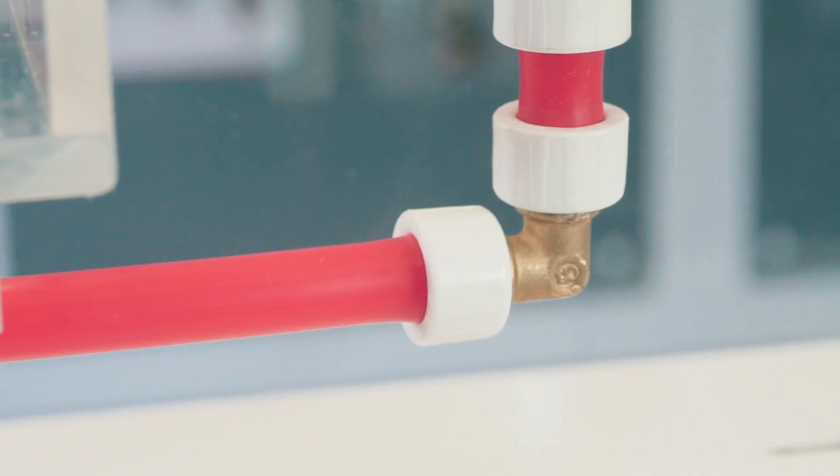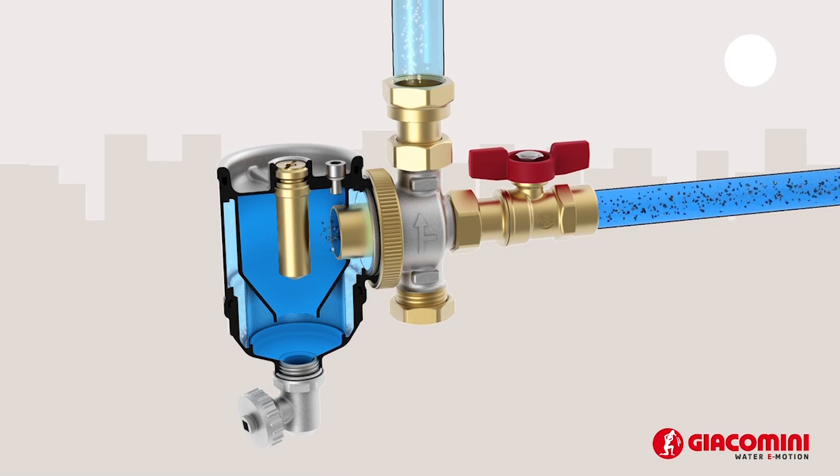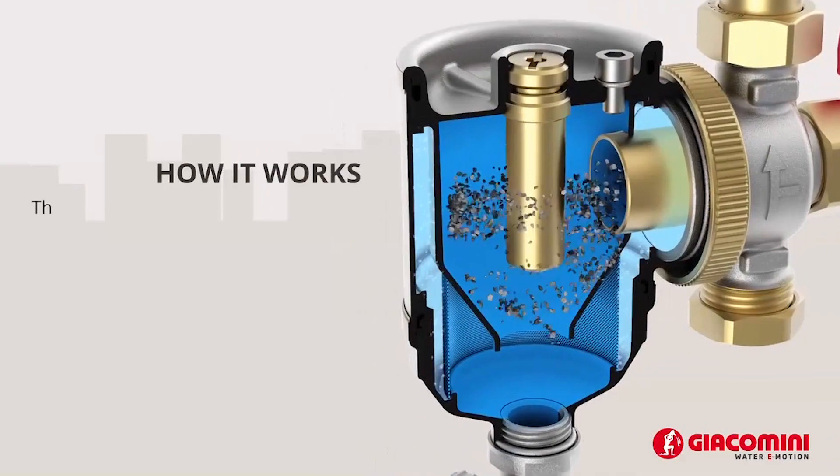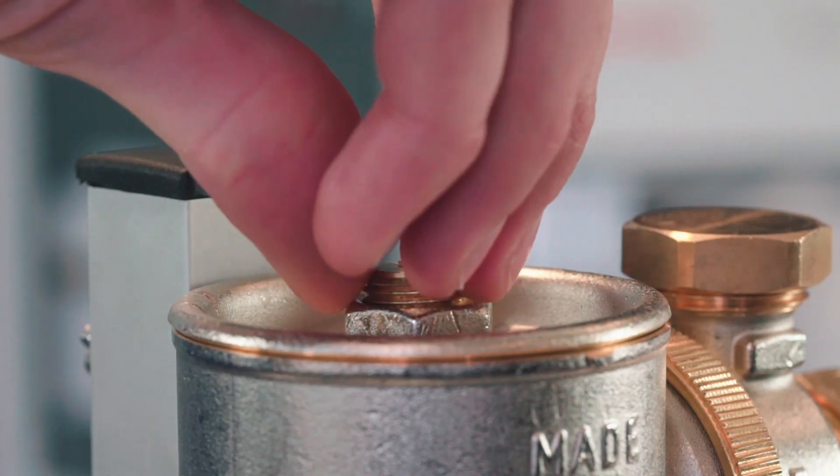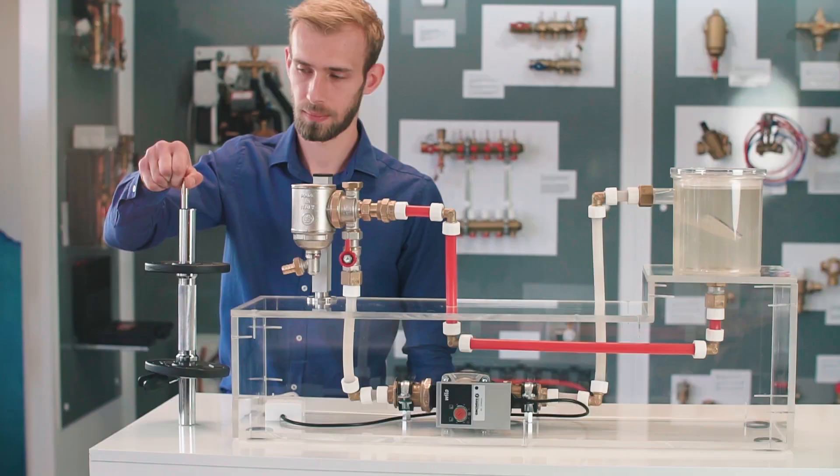Water flows into the device and is then directed into a cyclone chamber where the whirling motion facilitates the separation of impurities during the conventional filtration process. But this is only one part of the process.